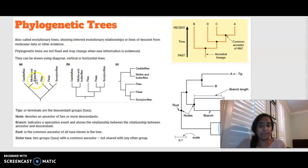The information that we have may change, but based on the information that we have, we can form these estimations of what we think is related. So they can be drawn using diagonal, vertical or horizontal lines. So I've got a couple of examples of what phylogenetic trees may look like here.